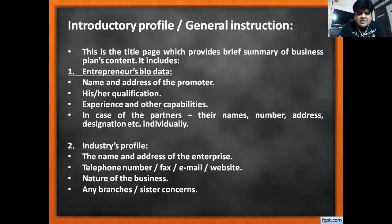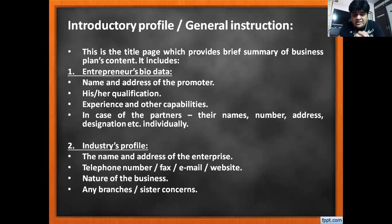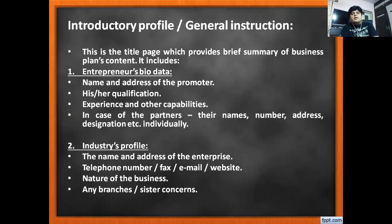You may ask: we are a new company, how can we have branches? It could be possible that any other business you have already done which is not yet registered, or any sub-branches you have opened — those are called sister concern branches. So basically in the industry profile or general instruction, very simplistic details are required.